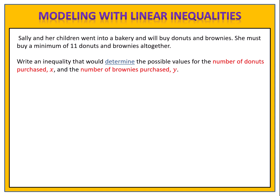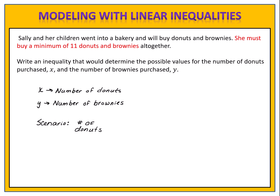Let's see how you did. We want to determine the number of donuts purchased, X, and the number of brownies purchased, Y. 'Determine' is the keyword that tells us where to look in the problem to define our variables. We're very specific: X is the number of donuts and Y is the number of brownies. The scenario is that she must buy a minimum of 11 donuts and brownies altogether. So the number of donuts plus the number of brownies is at least 11. X plus Y is greater than or equal to 11. Now we've written our inequality and we're all done.